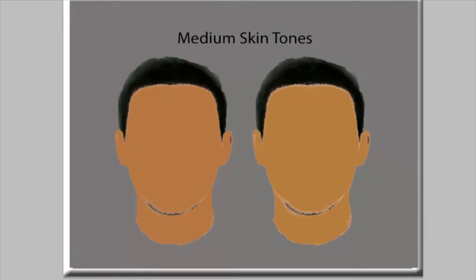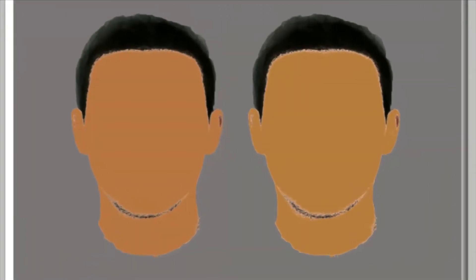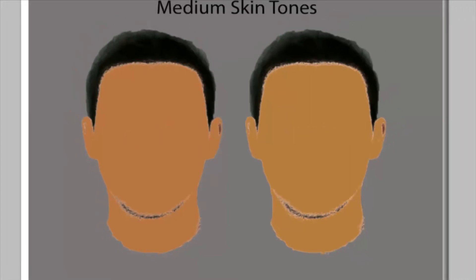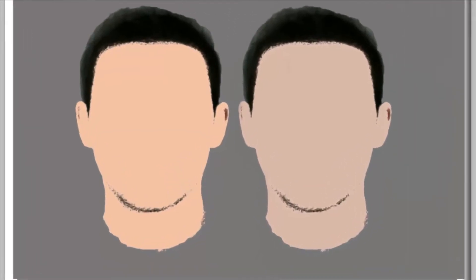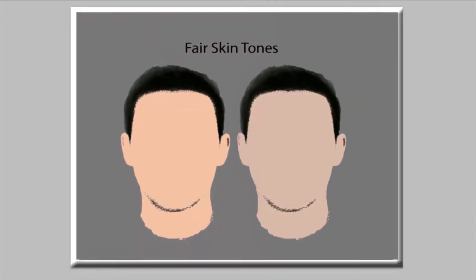Next we have the medium skin tones. As you can see, when you look at a medium skin tone person, their skin complexion can be cool or warm as well. And this also goes with a lighter skin person — their complexion and skin tone can be either warm or cool as well. These are not all of the skin tones, but here is a good start for building that foundation and recognizing skin tone.